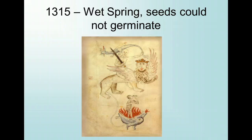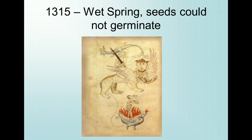A wet spring in the year 1315 made it impossible to plow all the fields that were ready for cultivation, and the heavy rains rotted some of the seed grain before it could germinate. The harvest was far smaller than usual, and the food reserves of many families were quickly depleted. People gathered what food they could from the forest — edible roots, plants, grasses, nuts, and bark. Although many people were badly weakened by malnutrition, the historical evidence suggests that relatively few actually died.